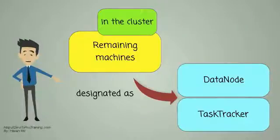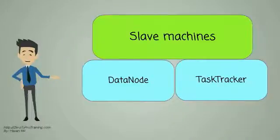The remaining machines in the cluster serve as both data node and task tracker. These are the slave machines.